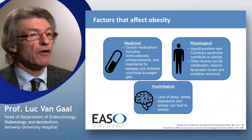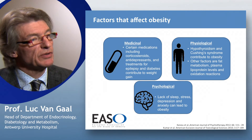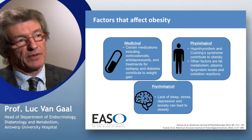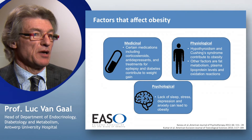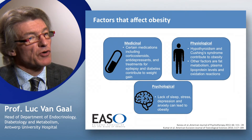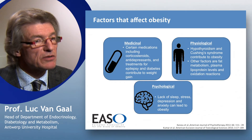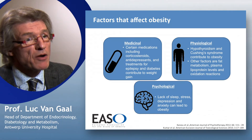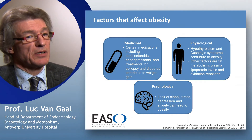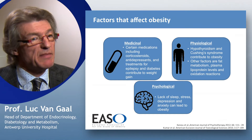Other factors are fat metabolism, plasma lipoprotein levels, and oxidation reactions, which also contribute. Very recently we have also learned that endocrine disruptors in the environment may accumulate within the body. These are compounds found in the environment such as bisphenols and dioxins. Although these compounds have been banned from industrialization processes for many years, they accumulate in fat cells and their consequences can be seen for many years.